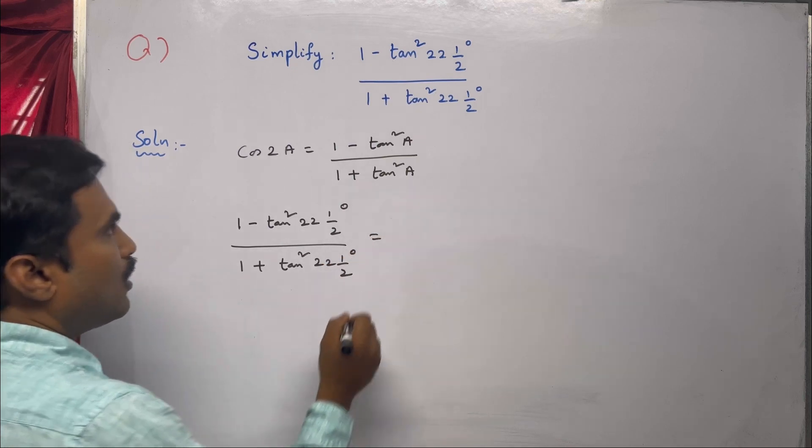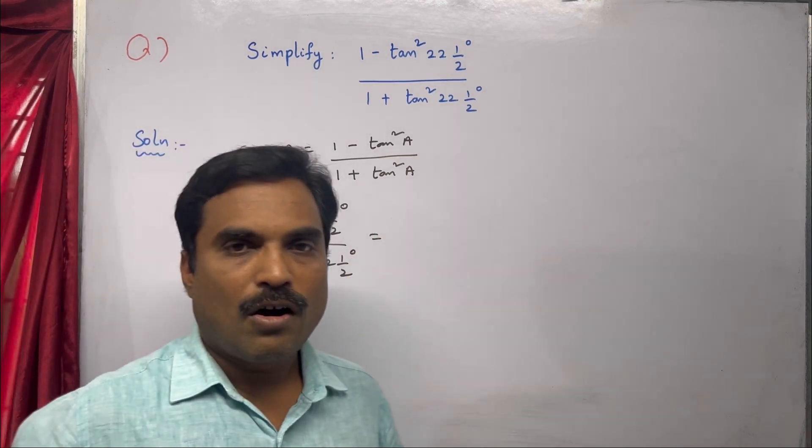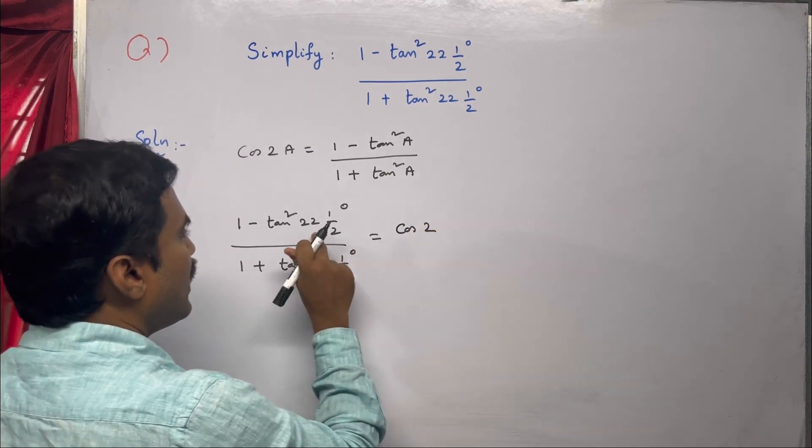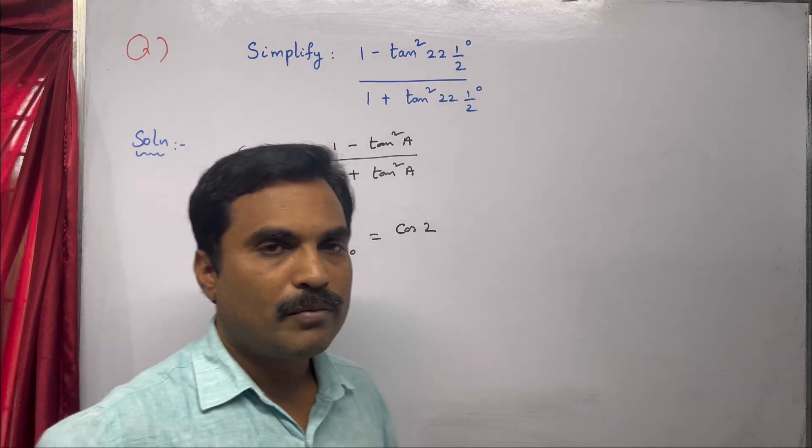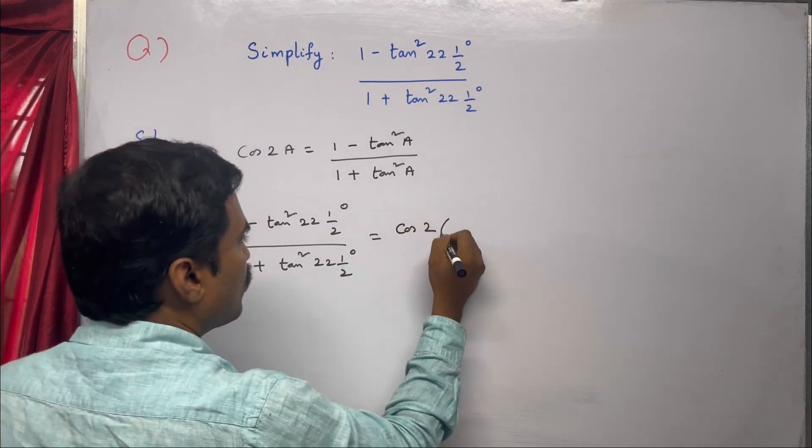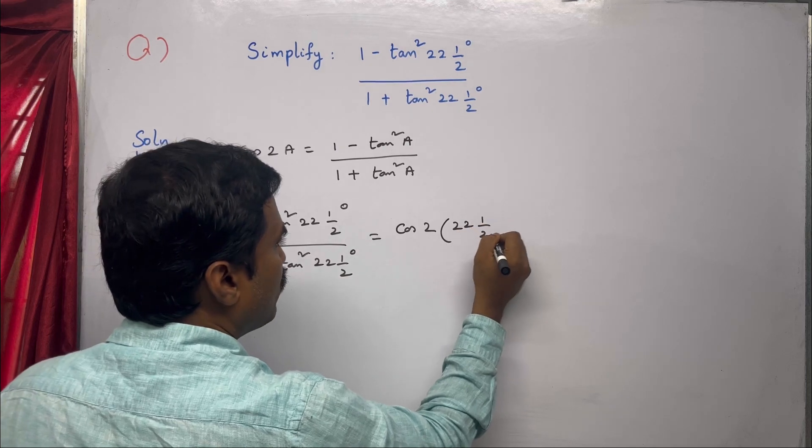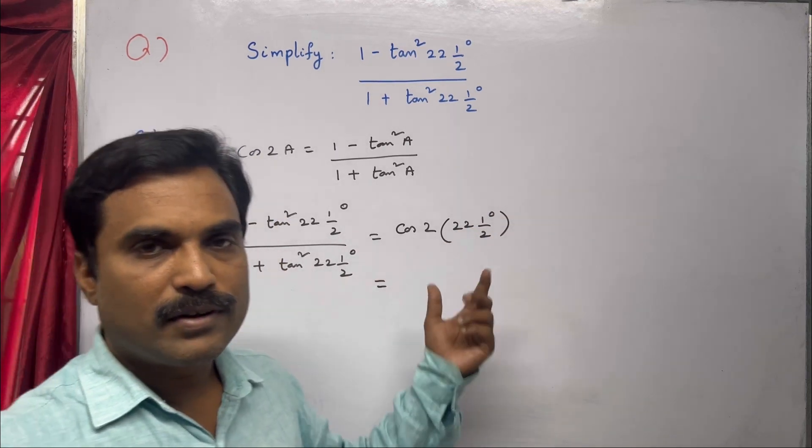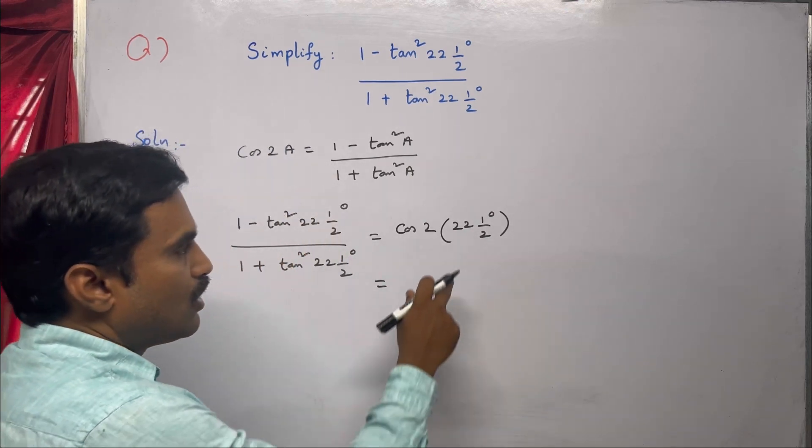Now we can write this as cos 2a. So cos 2 times what? In place of a we have 22 and 1/2 degrees, so that is the angle here. So 2 into 22 and 1/2 degrees. Now we will simplify this right hand side part.